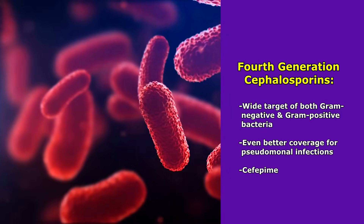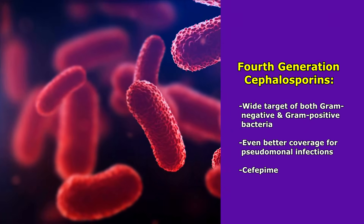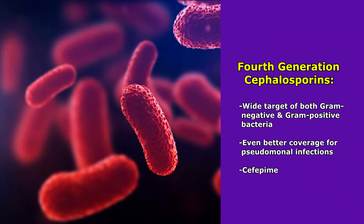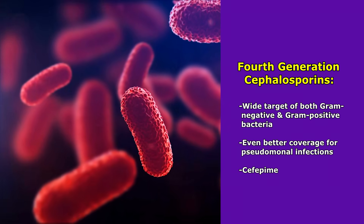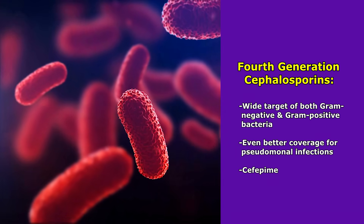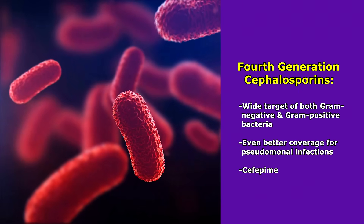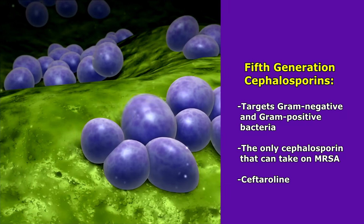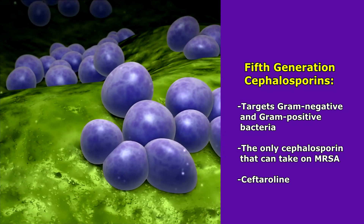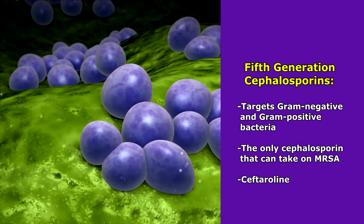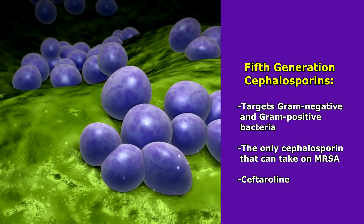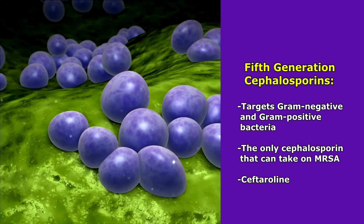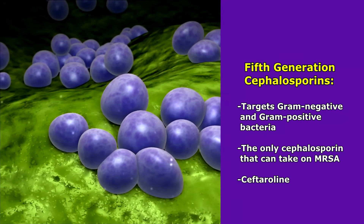Then we have the fourth generation, which has a wide target — it can target both gram-positive and gram-negative bacteria and has even better coverage for pseudomonal infections. A medication in this generation is cefepime. And then lastly, the fifth generation can target gram-negative and gram-positive bacteria and is actually the only cephalosporin generation that can take on MRSA. One fifth generation cephalosporin is called ceftaroline.